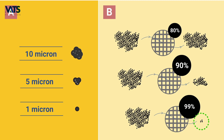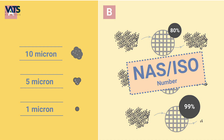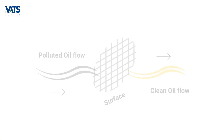So for a 99% efficiency, we will still have 1% of the particles passing on to the other side. In the case of oils, this will be a major factor deciding the resultant NAS number of the oil.